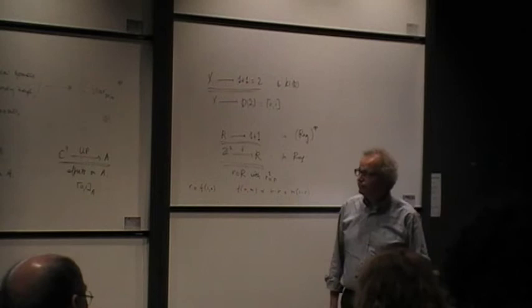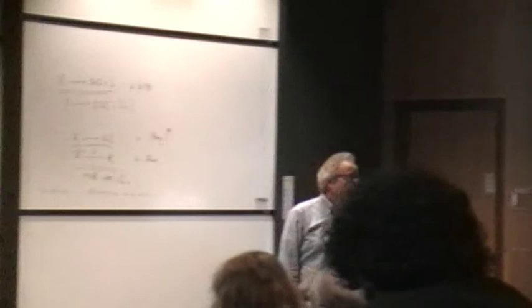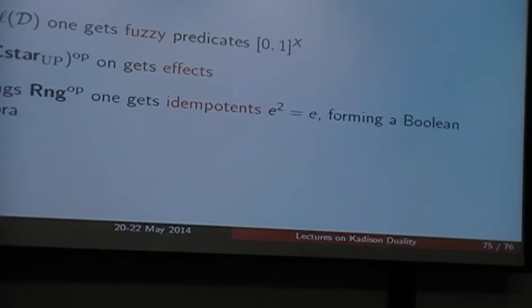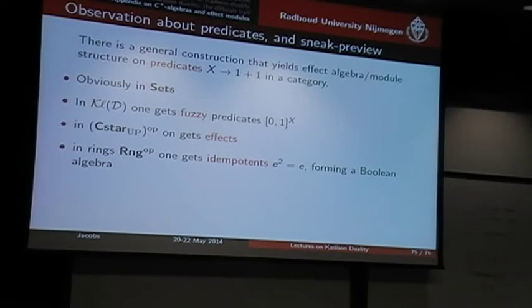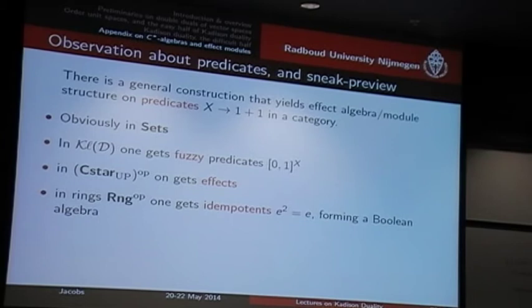The general result I will describe tomorrow is that they will always form an effect algebra. The maps from H to one plus one are always an effect module. That shows that it's a fairly natural construction — a fairly natural way that these kind of things emerge. In some cases they form a Boolean algebra, but not, for instance, in the C*-algebra case or in the fuzzy predicates case. In sets, of course, they do form a Boolean algebra.